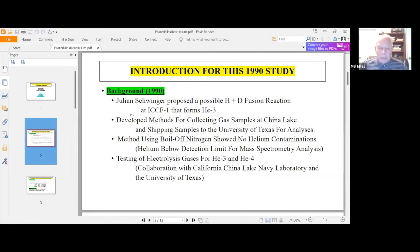What led up to this study was Julian Swinger proposed at the ICCF1 meeting, the first meeting, that an H plus D fusion reaction could be what's going on and it forms helium-3. So I wanted to look for helium-3, but as long as you're looking for helium-3, you might as well look also for helium-4.